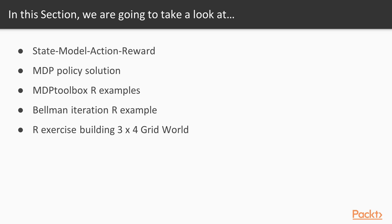We'll proceed by looking at additional important functions in the MDP toolbox using R. Then we'll move to yet another R example, looking at the very important Bellman function or Bellman Iteration Procedure to find an optimal value function for our original three-by-four grid world. Finally, we'll end the section with a user R exercise building the environment for our original three-by-four grid world.